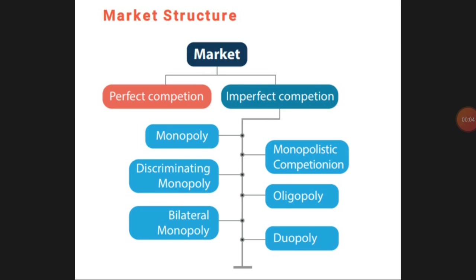Good morning students, we will continue with the 11th standard economics chapter 5. The next topic is market structure. In market structure there are two types: one is perfect competition and the next is imperfect competition. We will study imperfect competition in the next topic. Now we will go for perfect competition.